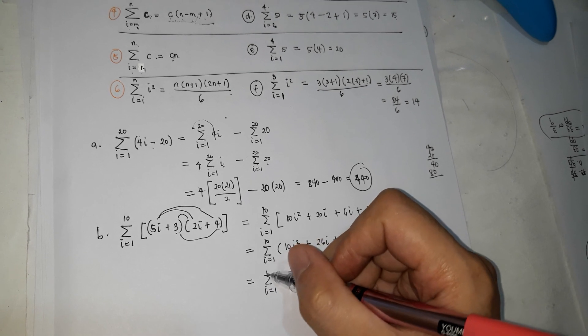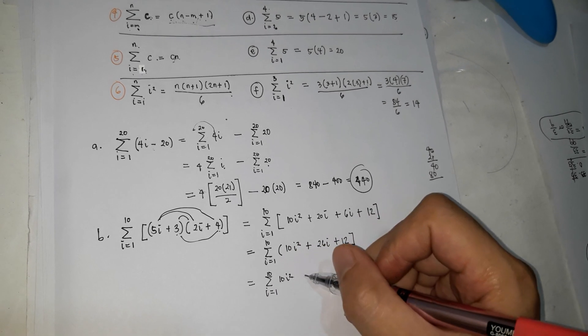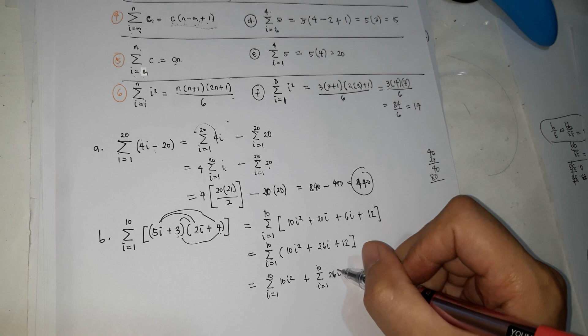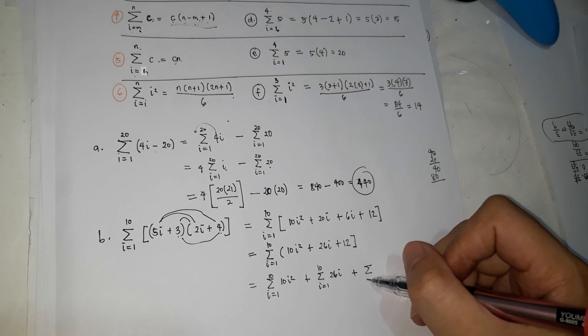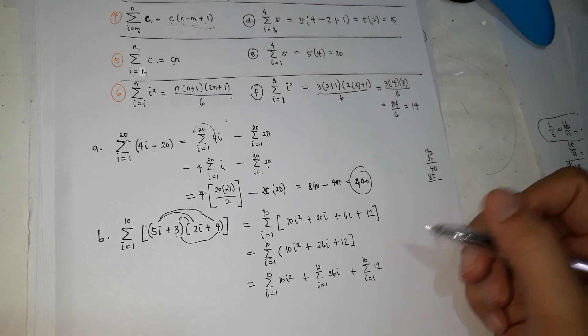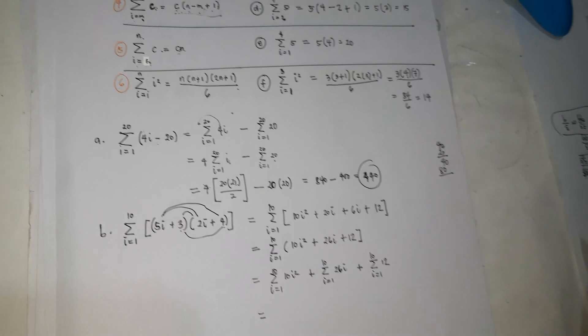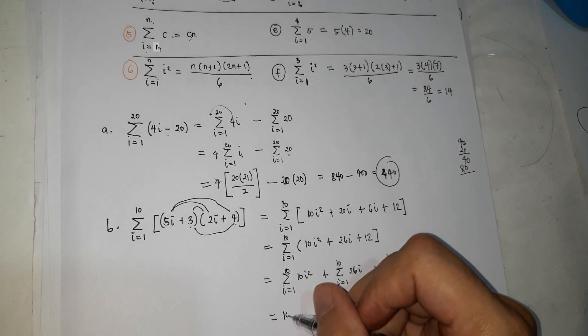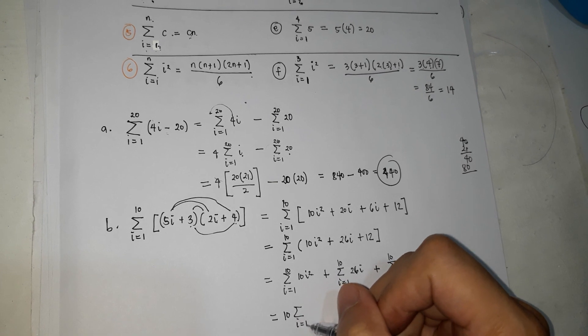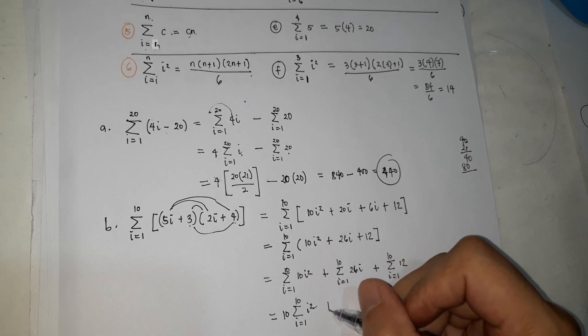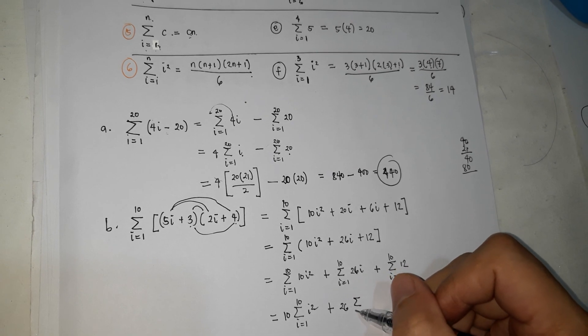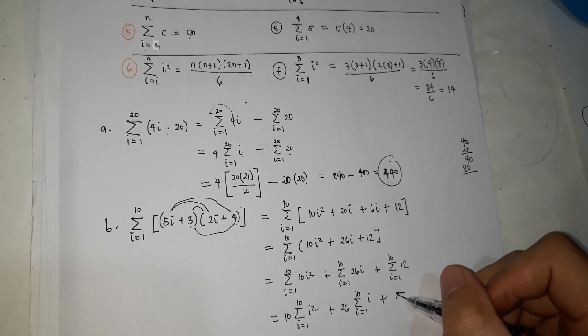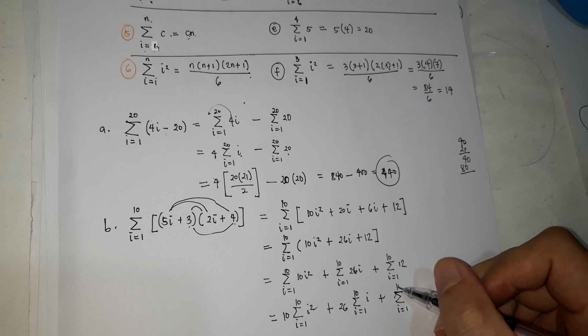10, 10i squared, plus summation of i is equal to 1, 10, 26i, plus summation of i is equal to 1, 10, 12, is equal to. Ilabas mo yung 10 sa labas. Plus 10, summation of i is equal to 1, 10, i squared, plus, labas yung 26, 1, 10, i, plus summation of, wala kang ilalabas dyan kasi constant na lang.